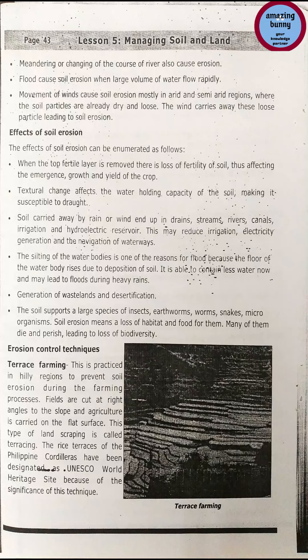Generation of wasteland and desertification are further effects. Soil supports a large number of species including insects, earthworms, snakes and microorganisms. Soil erosion means a loss of habitat for them, causing many to die and perish, leading to loss of biodiversity.